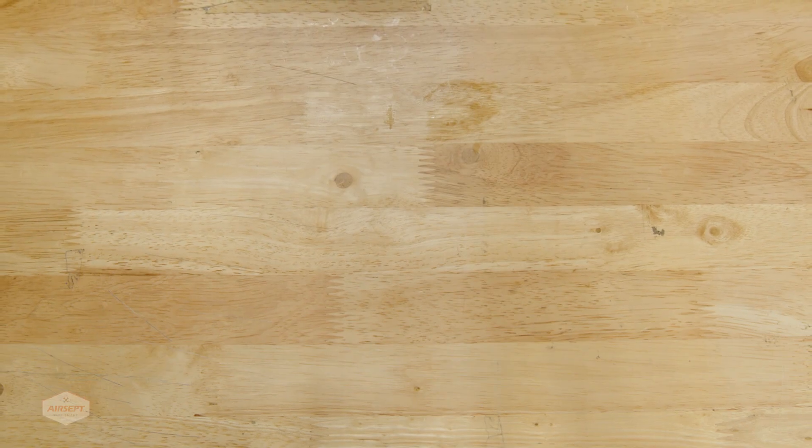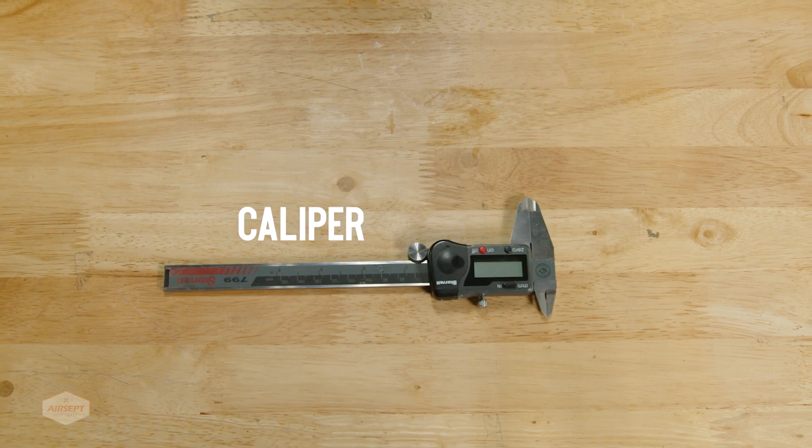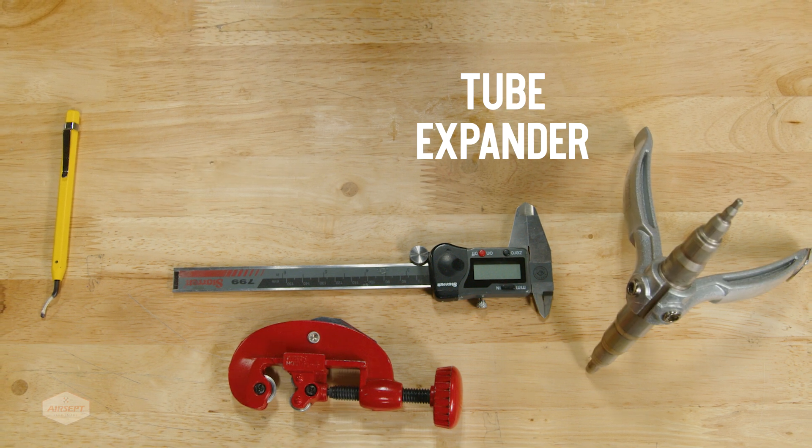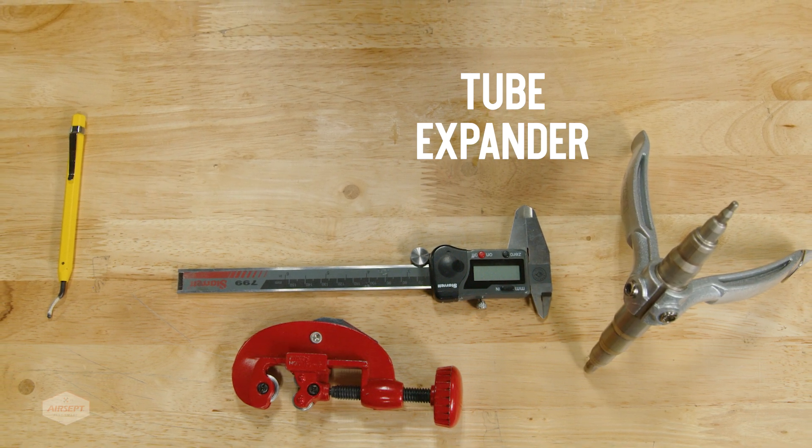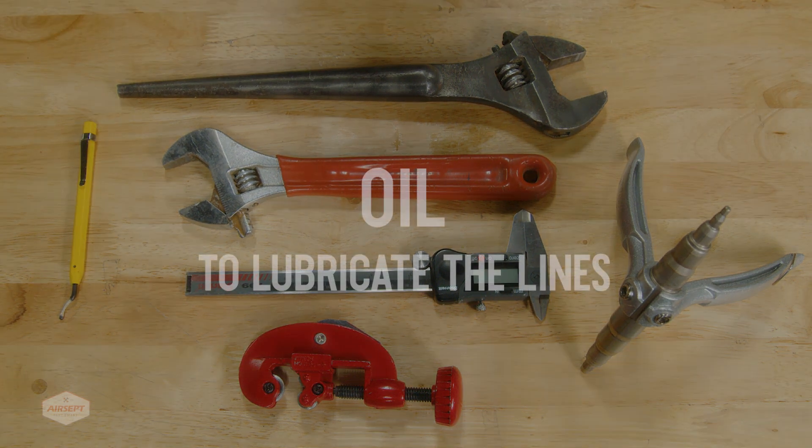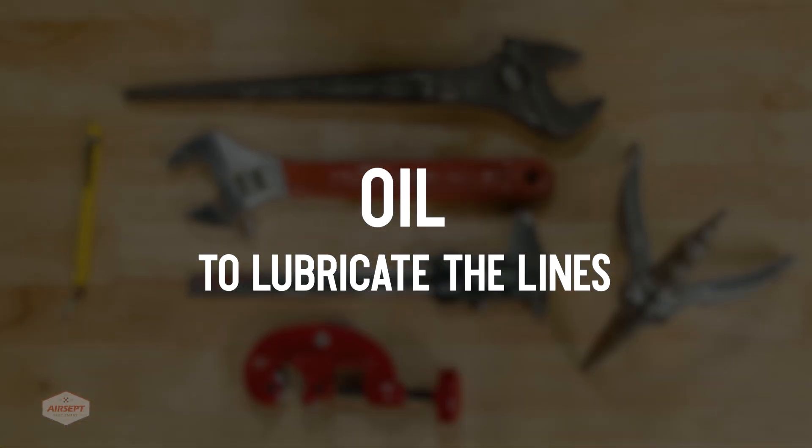You will need the following tools for this installation: a caliper, a tube cutter, a deburr, possibly a line extender or something to help make the lines round, and you'll need two open-end wrenches. And you'll definitely need oil to lubricate the lines before installation.